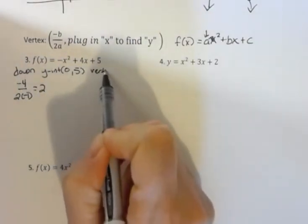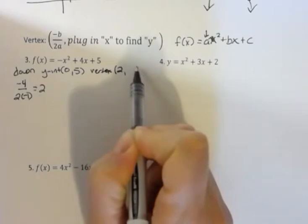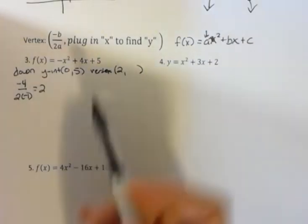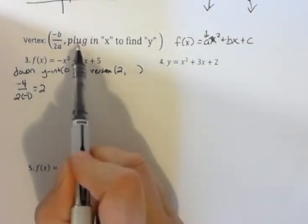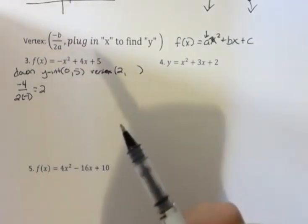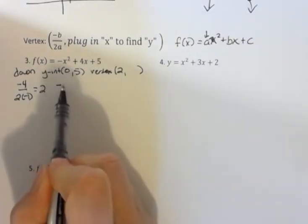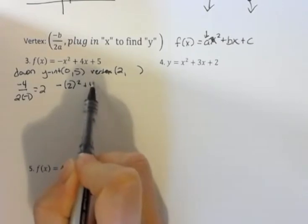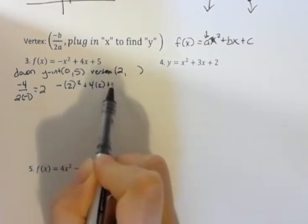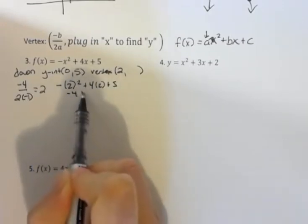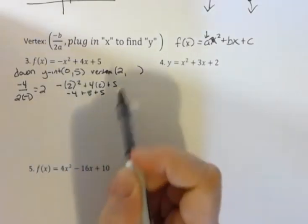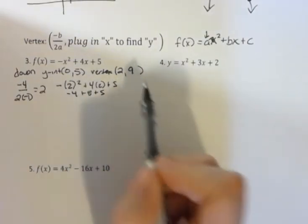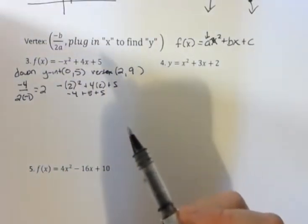So my vertex first coordinate is 2. And to find, after you find that, you plug in the x to find the y. So I would go back here and say, well, negative 2 squared plus 4 times 2 plus 5. And that's negative 4 plus 8 plus 5 which is 9. So I have a vertex of 2, 9.